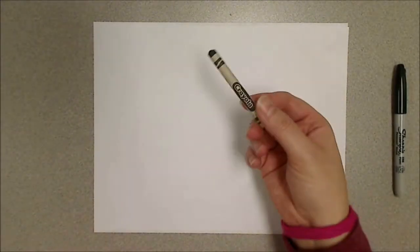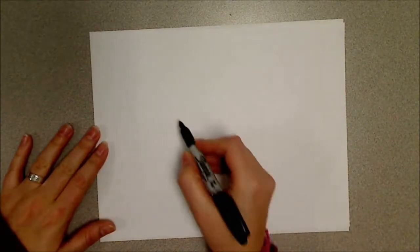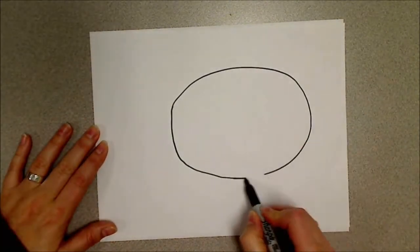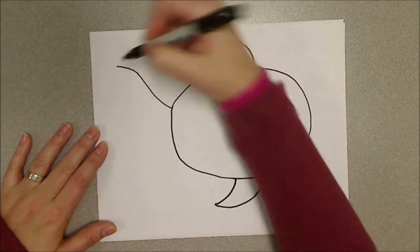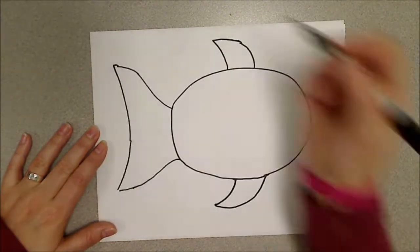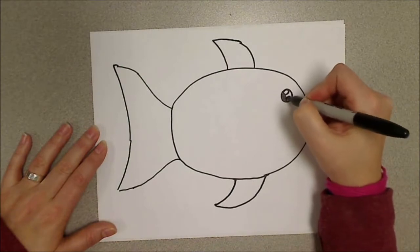A sharpie would be helpful, oil pastel or black crayon. To start off, you want to draw an oval for your fishy body. Then you're going to add a fin on top and a fin on bottom. The tail on the back gets larger and you use a curved line.